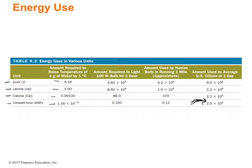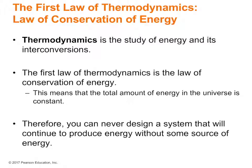You burn a lot of joules running one mile, but you use even more running light bulbs. The first law of thermodynamics states that with energy, you cannot get something for nothing. It is the law of conservation of energy: the total amount of energy in the universe is constant. You cannot add energy out of nowhere, so you can never design a system that will continually produce energy without some energy source.